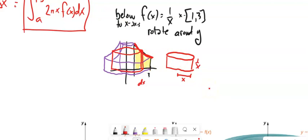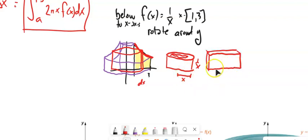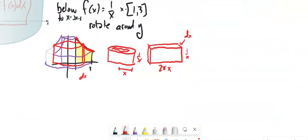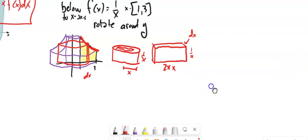If I take that and fold it out — cut it and slice it — I know the circumference, the distance around, is 2πx. The height is the function 1/x, and then I have this little change in x that I'm going to let get infinitesimally small. My setup, running from 1 to 3, is the integral of 2πx · (1/x) dx.